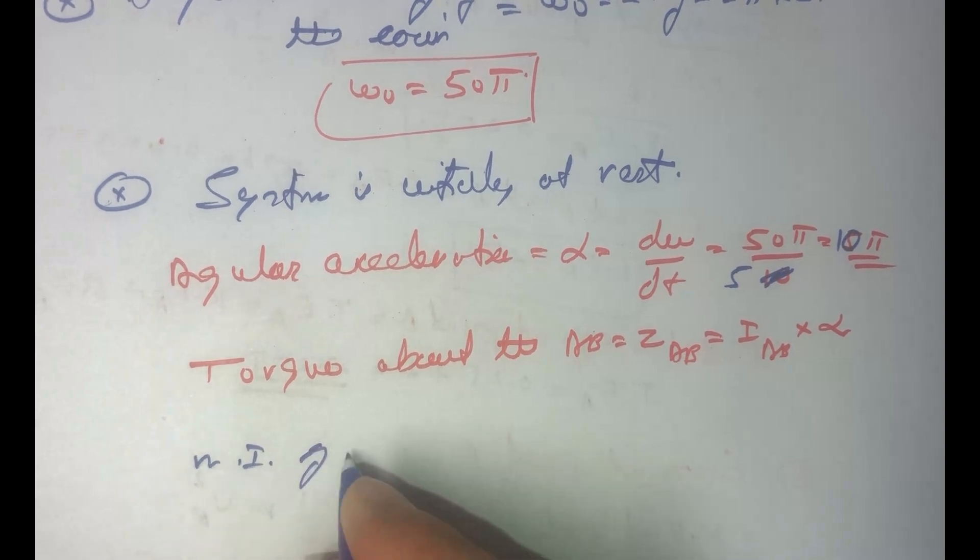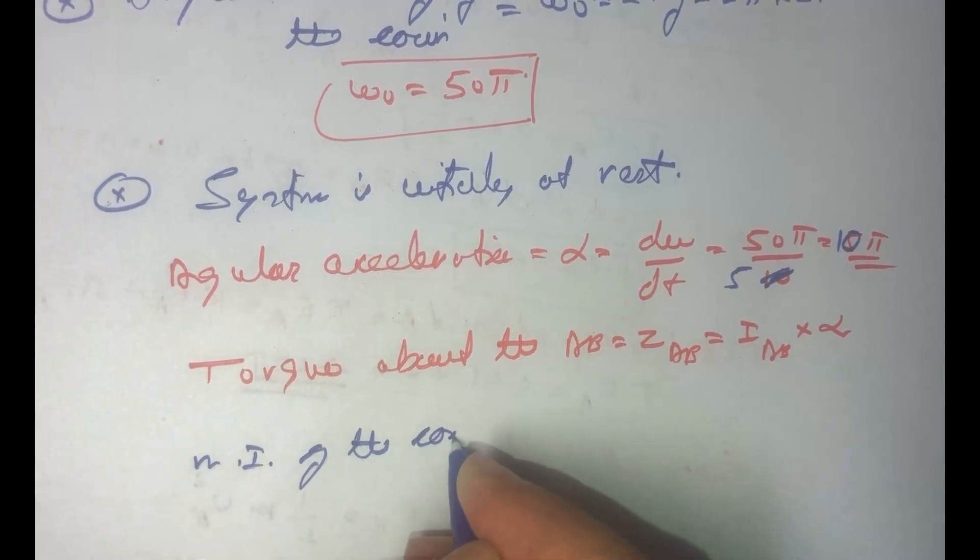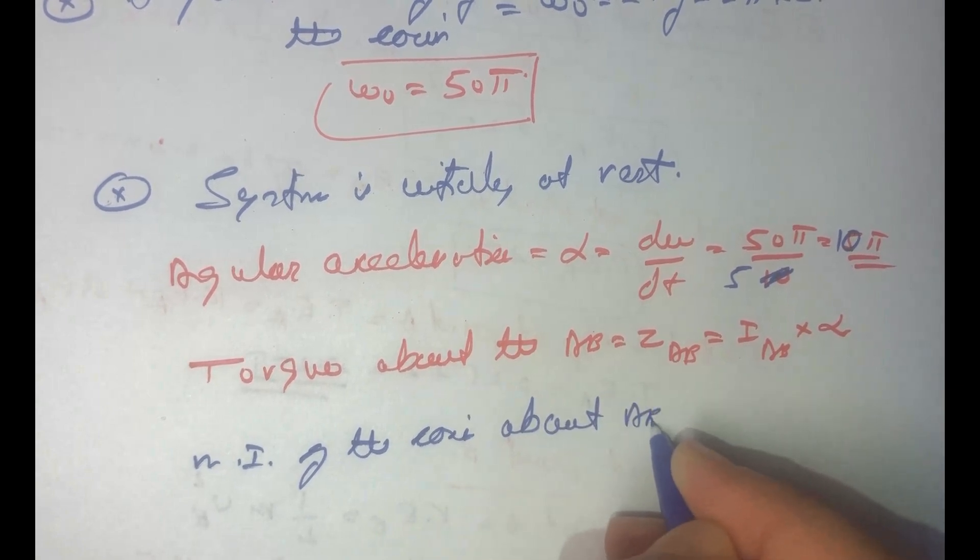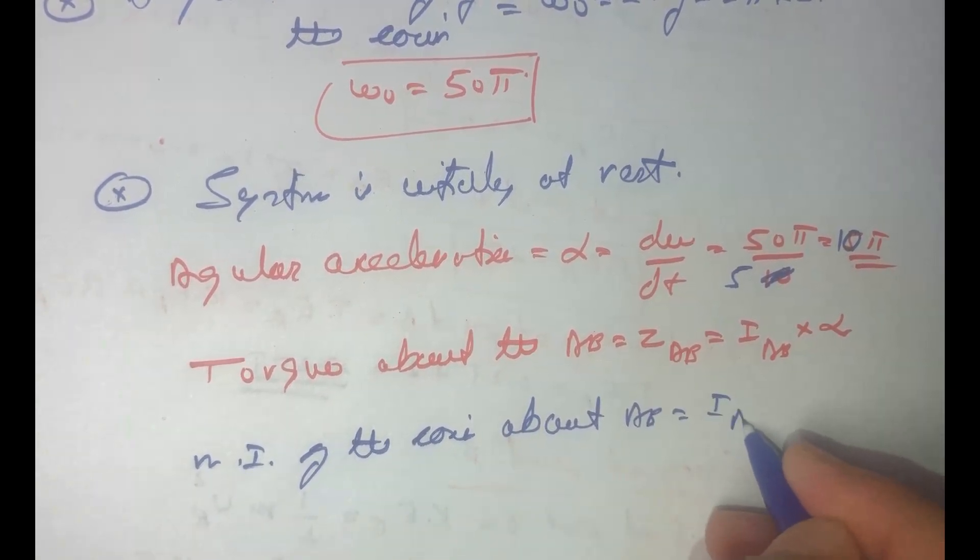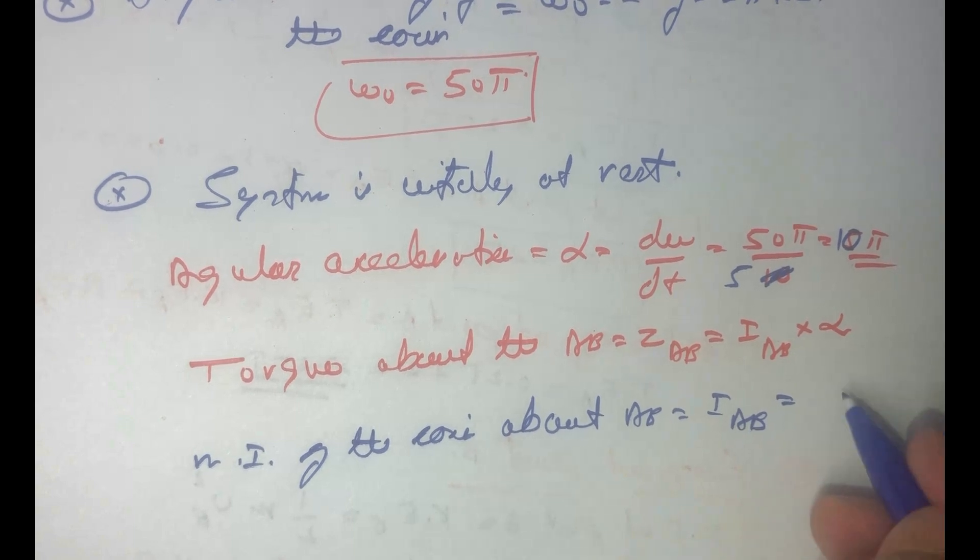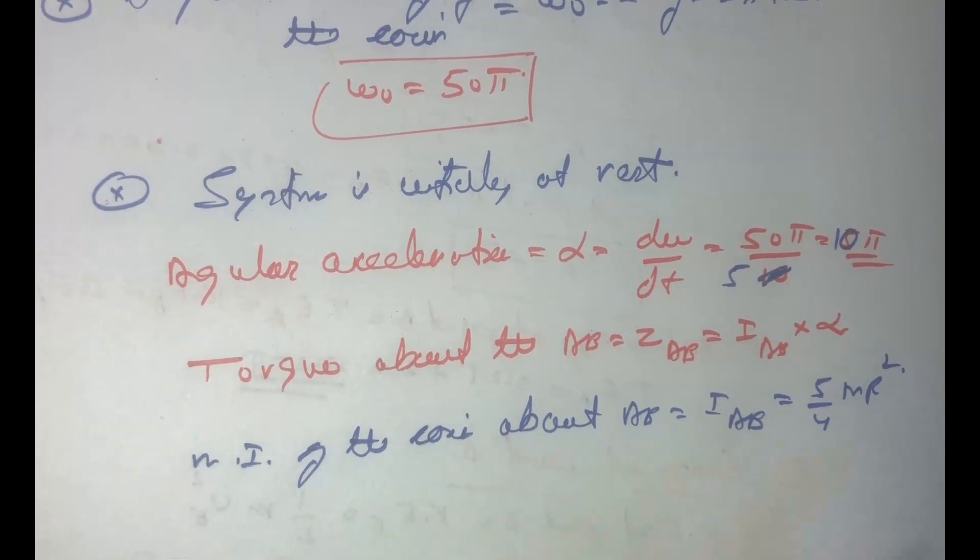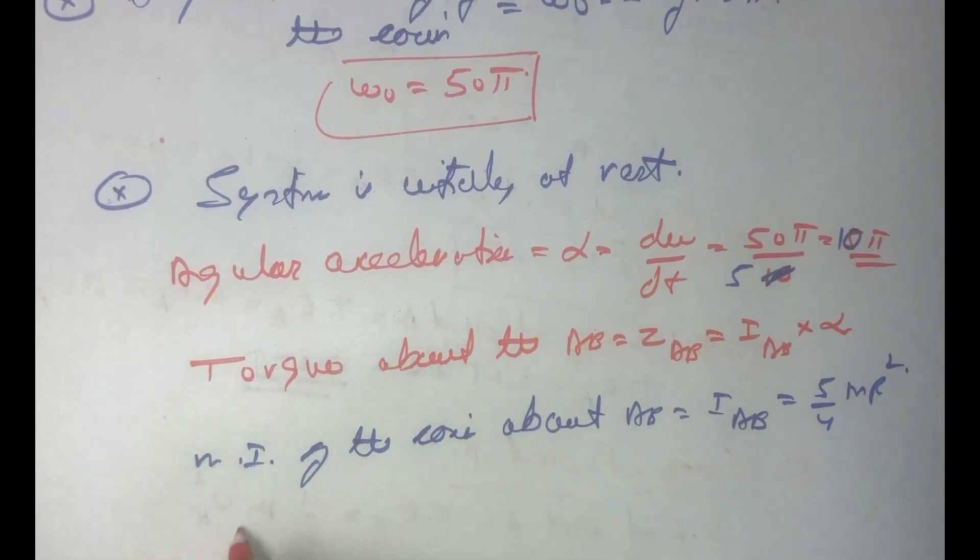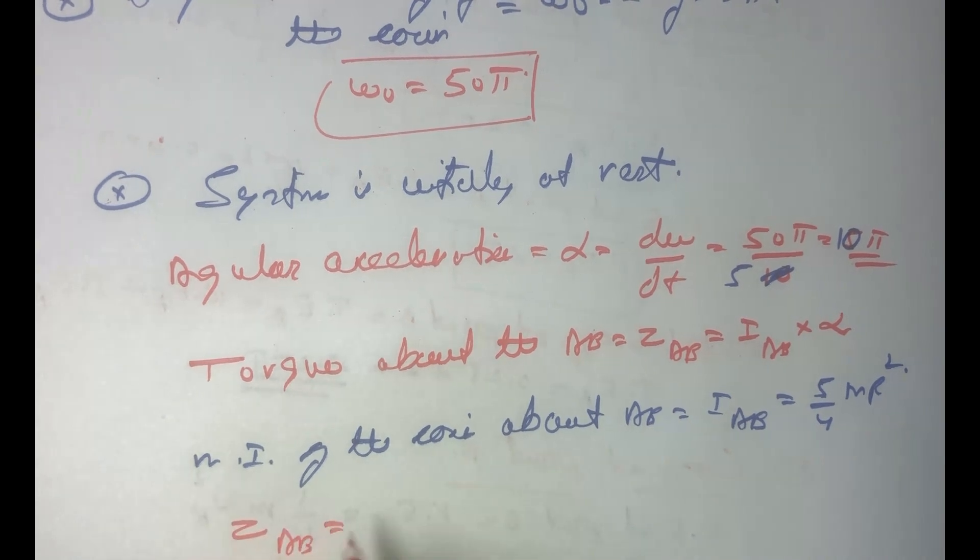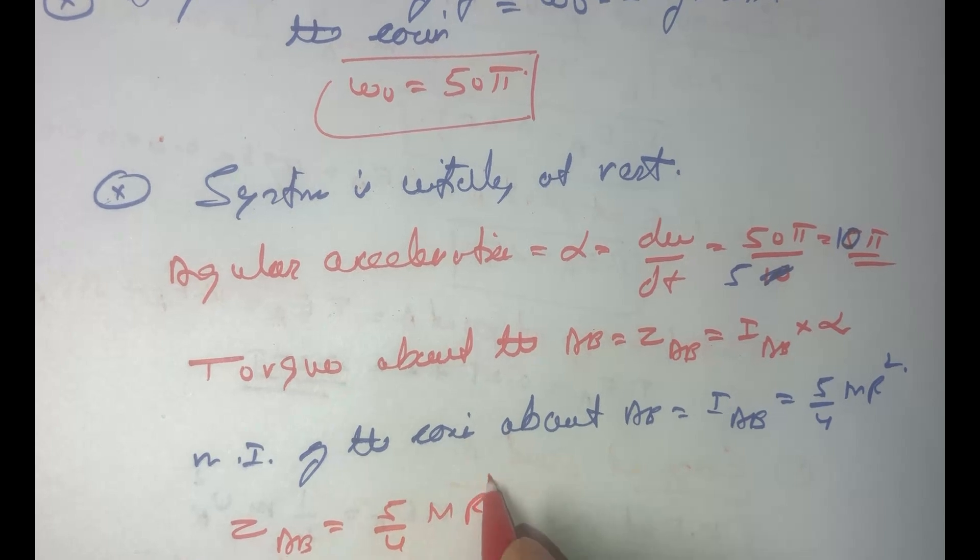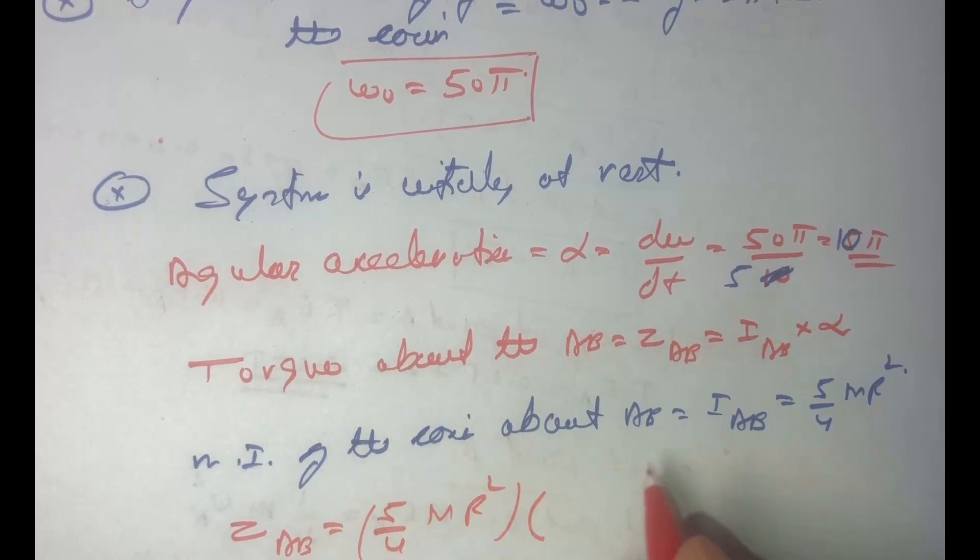Moment of inertia of the coin about AB which is I AB, and this I AB is π by 4 m r square. Now substituting the value we get torque AB is equal to 5 by 4 m r square multiplied by alpha.